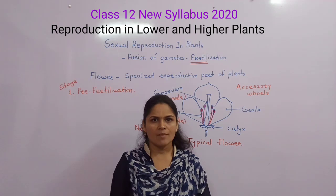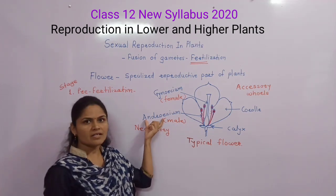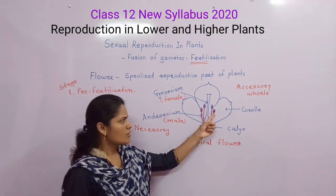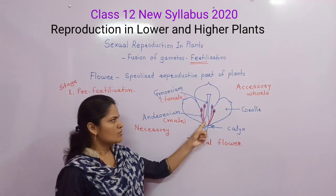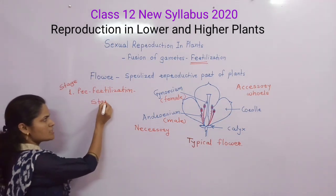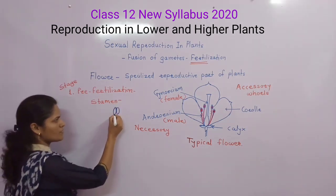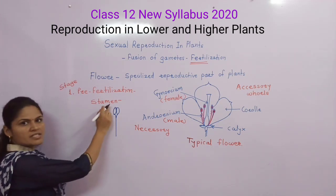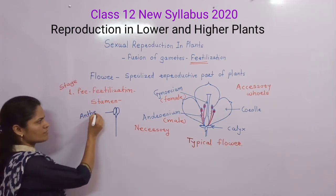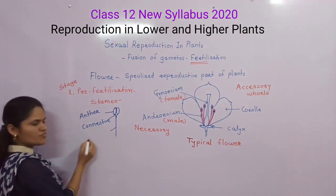Development of the male gametophyte takes place in the male reproductive part of the plant — the androecium. Androecium consists of a group of stamens. Each stamen consists of three parts: anther, connective, and filament.